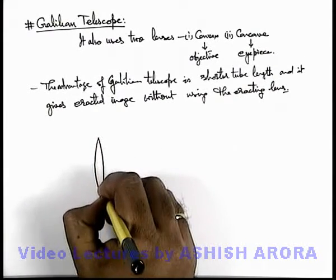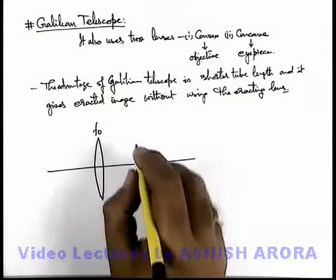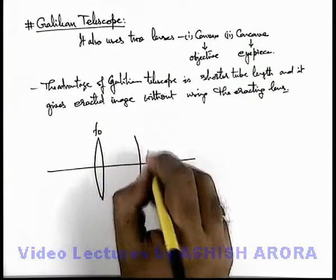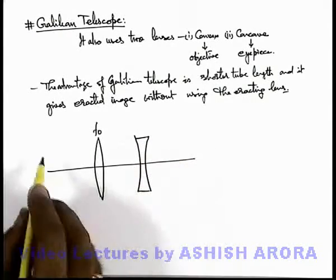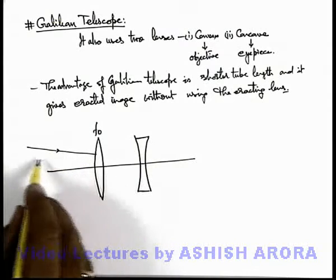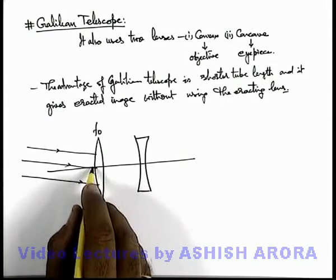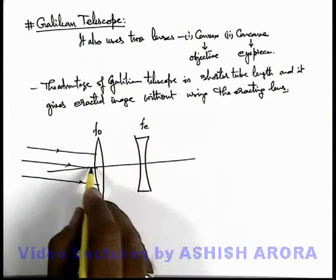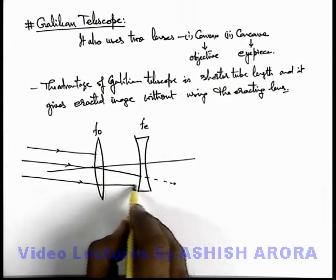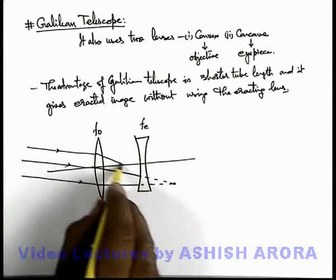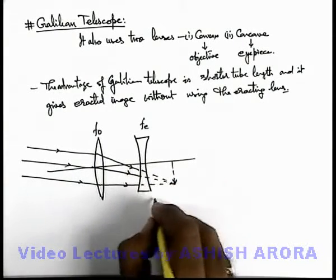Let us have a look at its geometrical setup. Here the objective is the convex lens which is f-o, and at some distance from this objective we place an eyepiece lens which is a diverging or concave lens. In this situation, if parallel rays from infinity or from a distant object are incident, the second lens which has focal length f-e is placed such that the final image is located at a point which is the focal length of this eyepiece.